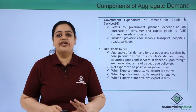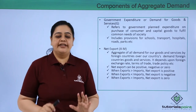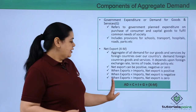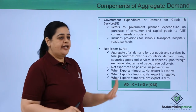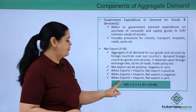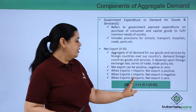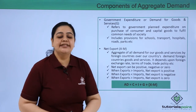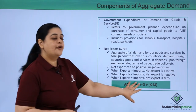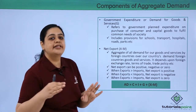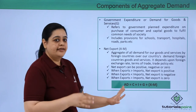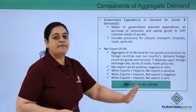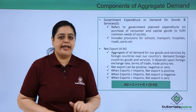These are the four components of aggregate demand. The formula for aggregate demand is: AD = C + I + G + (X − M), where C is household consumption, I is investment expenditure by firms, G is government expenditure, and X minus M represents net exports.